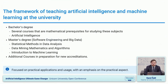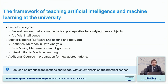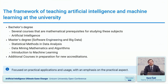Our courses are spread across bachelor and master degrees. On the bachelor degree, we have several courses relevant to artificial intelligence, including mathematical prerequisites such as mathematical analysis, linear algebra, optimization, and a dedicated artificial intelligence course. On the master degree, there is a specialization called Software Engineering Big Data with subjects including Statistical Methods in Data Analysis, Data Mining Mathematics and Algorithm, and Introduction to Machine Learning. We are also preparing additional courses for future accreditation.